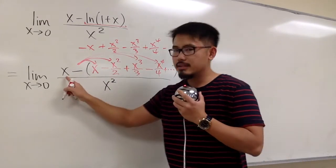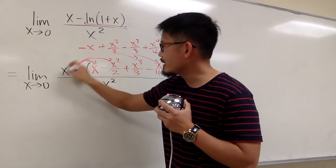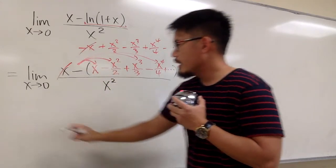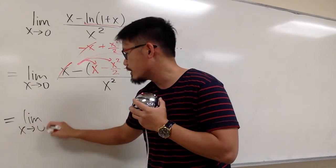All right. This x and that -x cancel each other out. Get rid of them. And what do we have next? This is still the limit as x goes to 0.